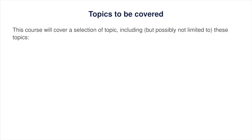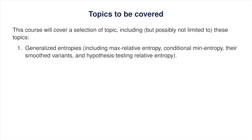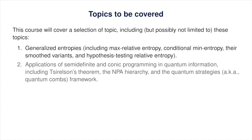The topics that I'm planning to cover in this course include the following. First, I'll discuss generalized entropy measures, including max relative entropy and the entropic quantities it induces, such as conditional min-entropy, along with smooth variants of these quantities. Also, we'll discuss the hypothesis testing relative entropy, and we'll relate these quantities to the ordinary quantum relative entropy and von Neumann entropy.